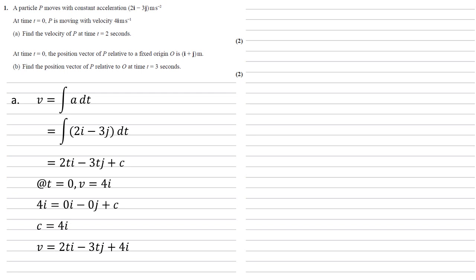I'm now just going to bring those i's together. So we get 2t plus 4i minus 3tj. But we need to find the velocity at time t equals 2, so we're going to substitute that in, which gives us 2 times 2 plus 4i minus 3 times 2j. So a final answer of 8i minus 6j.